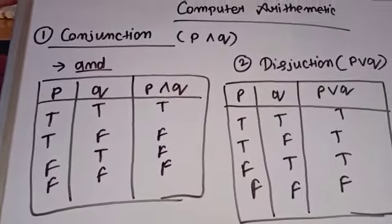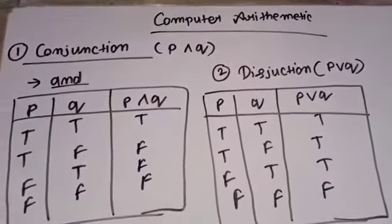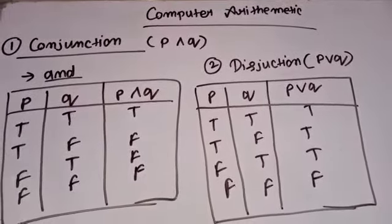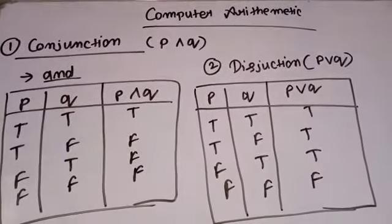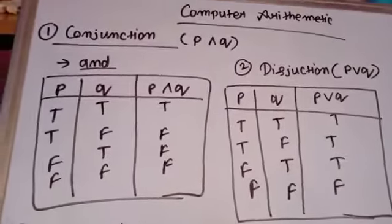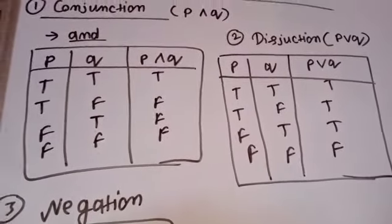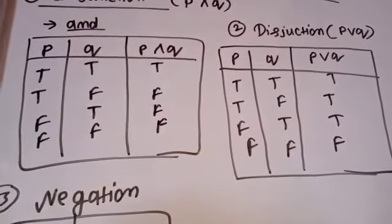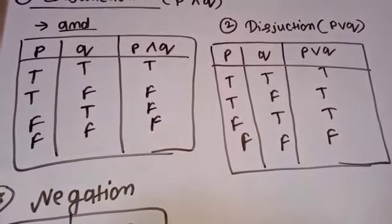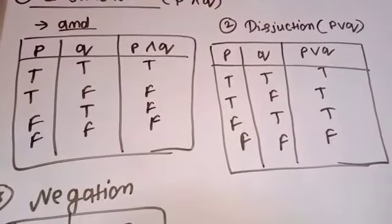You can see I have made three tables over here. Conjunction means we have two variables. We need to take a few variables and make a table which we call a truth table. A truth table can be made by using two variables, three variables, or four variables. So here we have made a truth table.